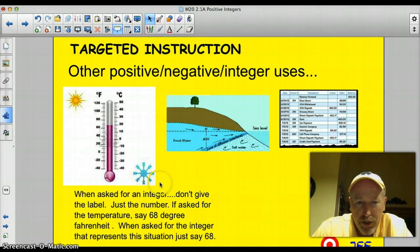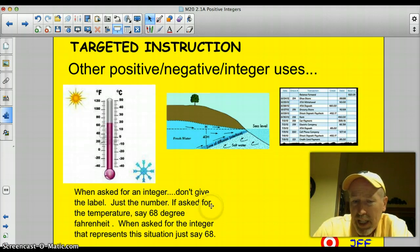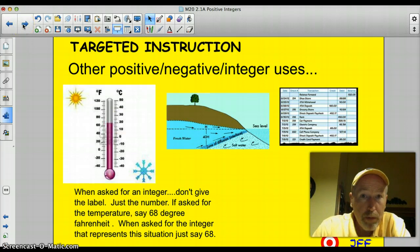Finally, when asked for an integer, don't give the label, just the number. If somebody says, what's the temperature, then you say 68 degrees Fahrenheit. But if they ask you for the integer that represents that situation, just say 68, not the label. A little different. But there will be questions on it.